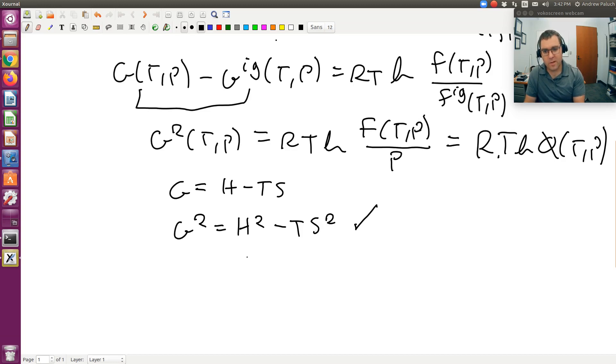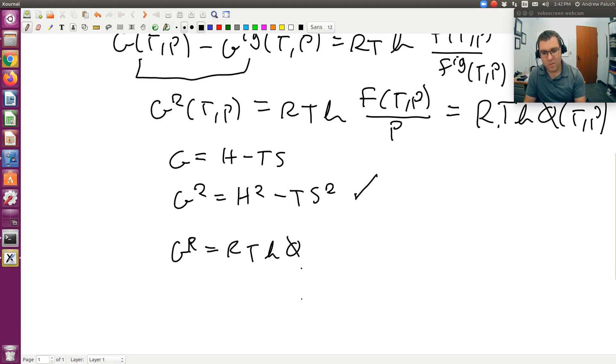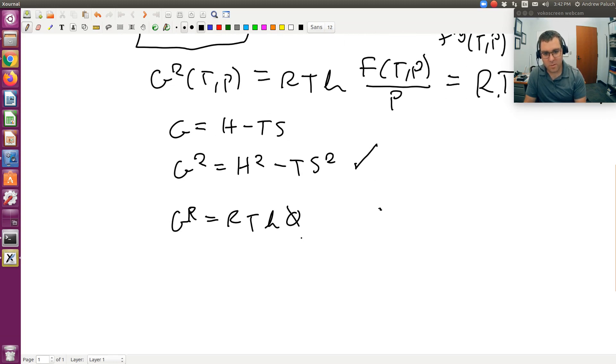And so once I get GR, again, GR would be equal to RT log phi. Or just for completeness sake, phi then would be equal to the exponential of GR divided by RT.